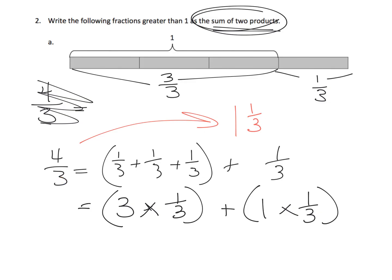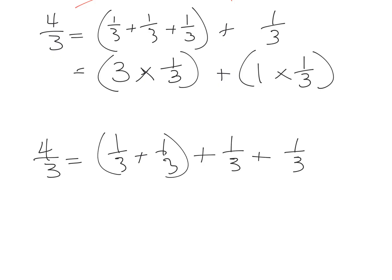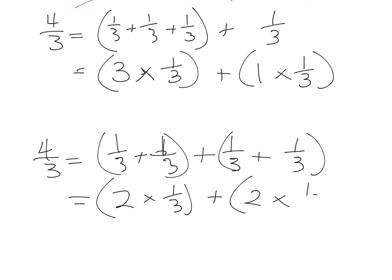There is no magic for what the answer could be. If you think about it, four-thirds is one-third plus one-third plus one-third plus one-third. We could put parentheses and change this to two times one-third plus two times one-third. There's no rule right now for how we use a sum of two products, so there's another option.